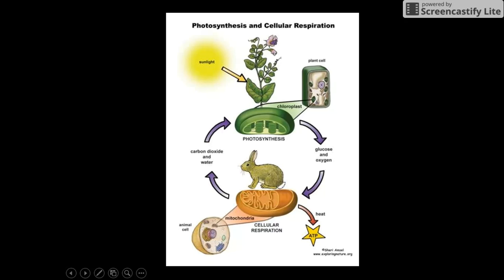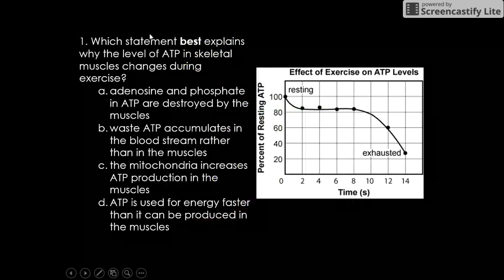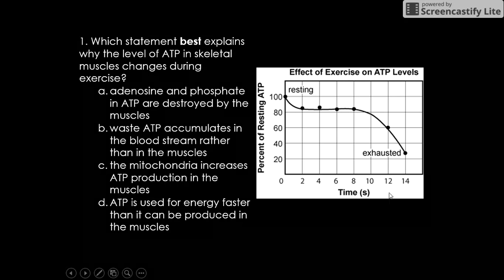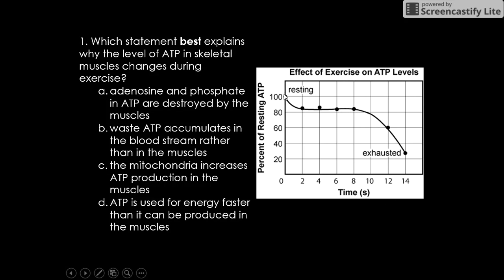Alright, so which statement best explains why the level of ATP in skeletal muscles changes during exercise? How does our energy change in muscles during exercise? If you're exercising, if we look at the graph, we're looking at our percentage of resting ATP and the amount of time we're exercising. We're resting up here, and then we start exercising, and what do we see? The ATP goes down until we are exhausted.